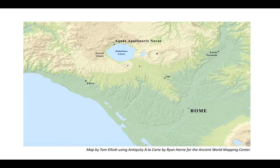In antiquity, this site on the north was called Acquae Apollinares Novae. It was a health spa and bathing establishment sacred to the god Apollo, fed by natural hot springs.